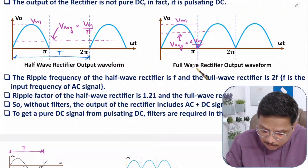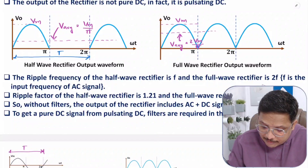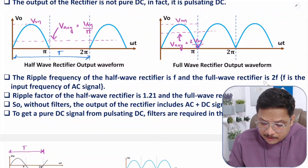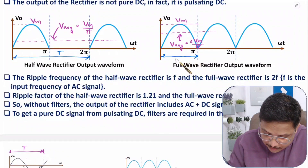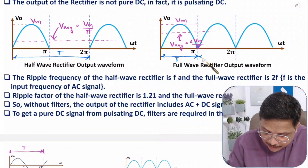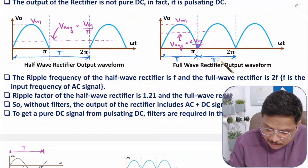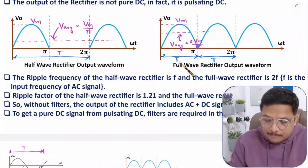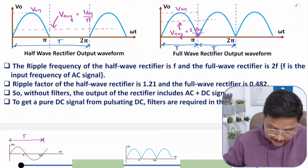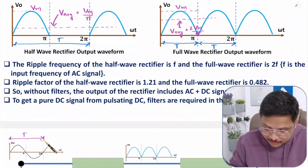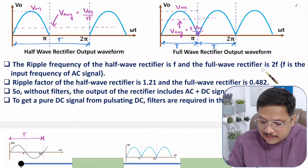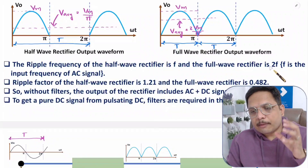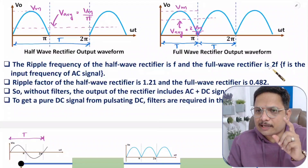For a full-wave rectifier, the ripple frequency is 2f. If you observe, the ripple repeats with a time period that is half of the AC input signal's time period, meaning the frequency is doubled. So ripple frequency with half-wave is f, and with full-wave it is 2f — double the input frequency.